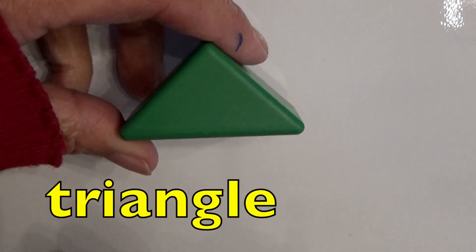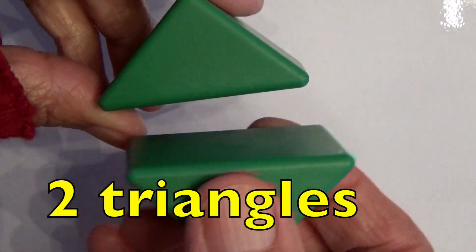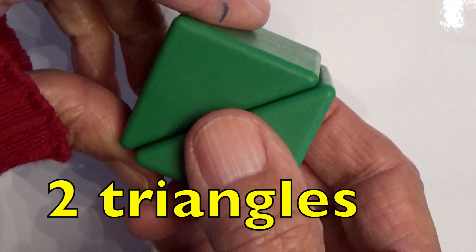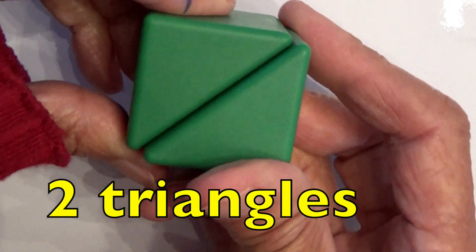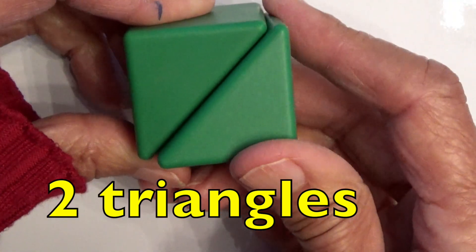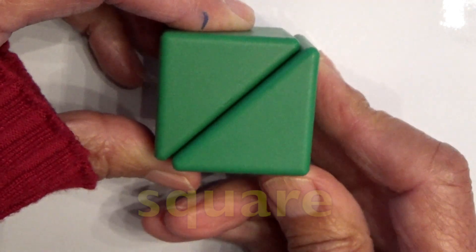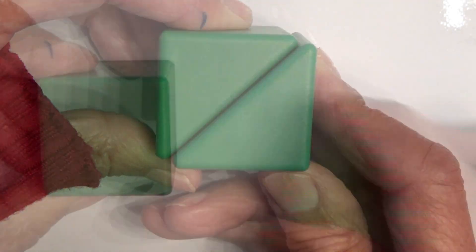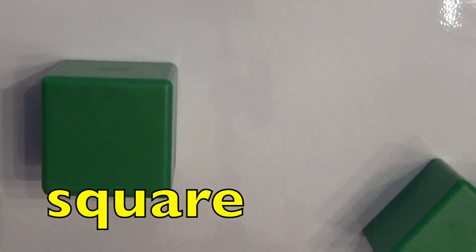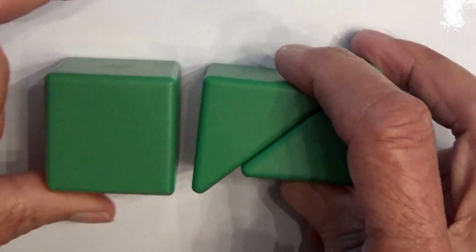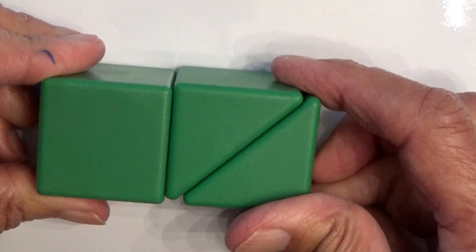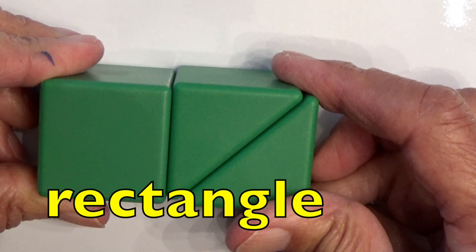Triangle shape. Let's put two triangles together, see what it forms here. Two triangles makes what shape, boys and girls? A square. Here we have a square, that's it. You have now a rectangle, don't you?